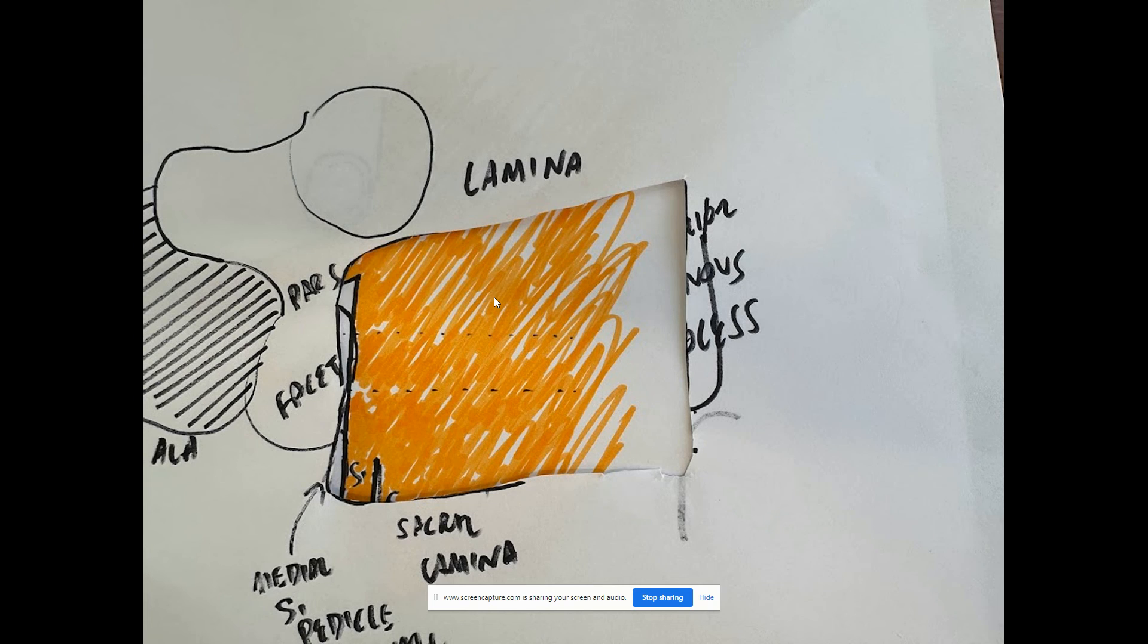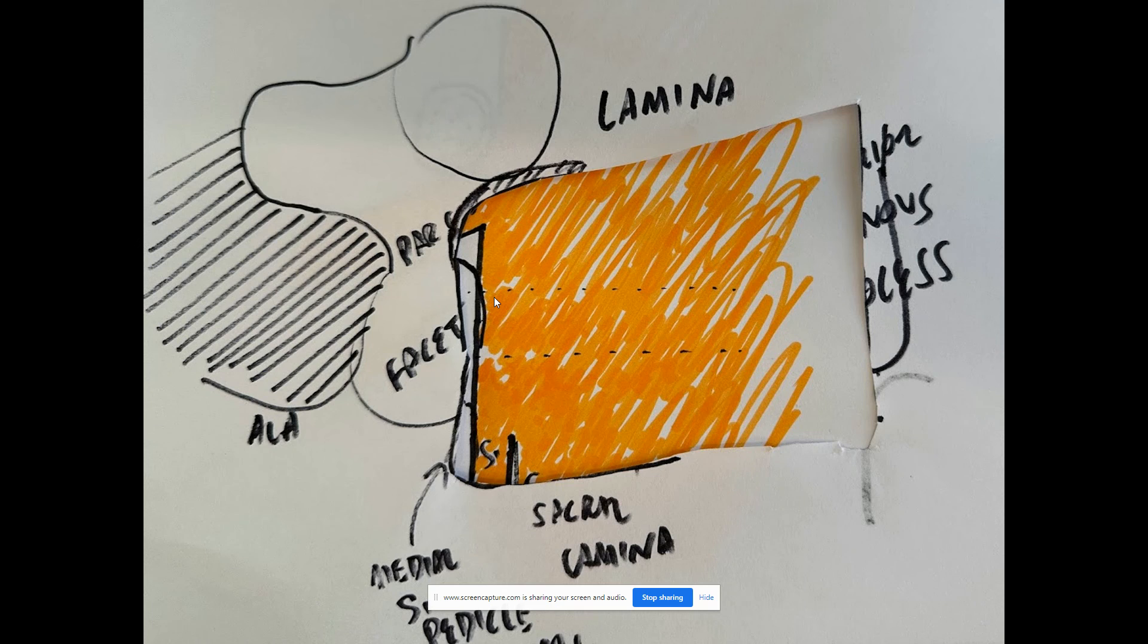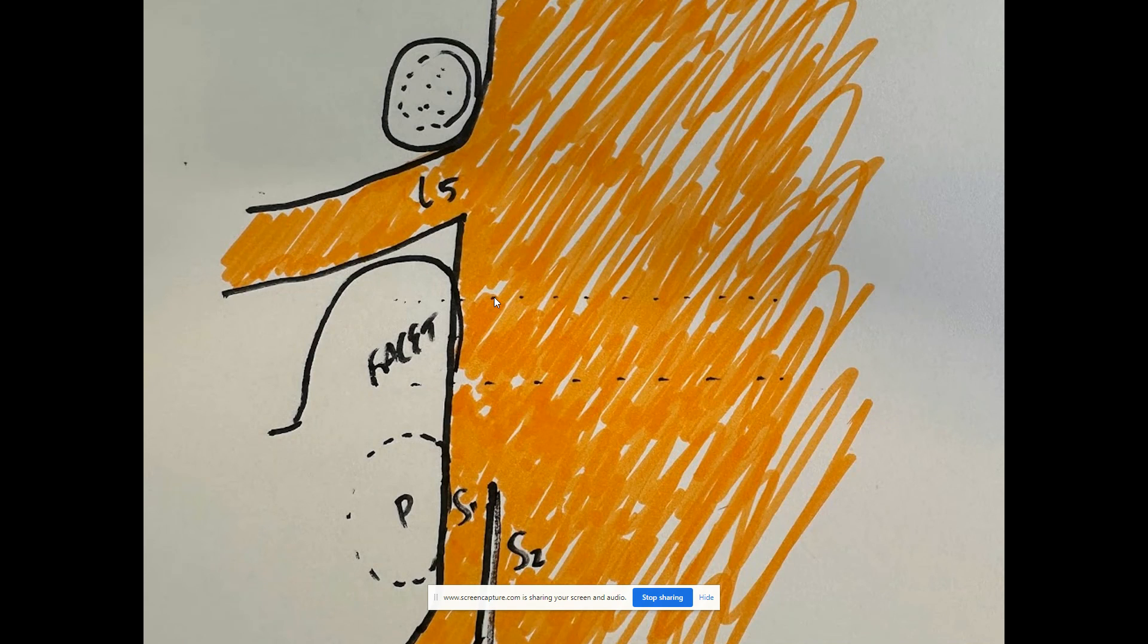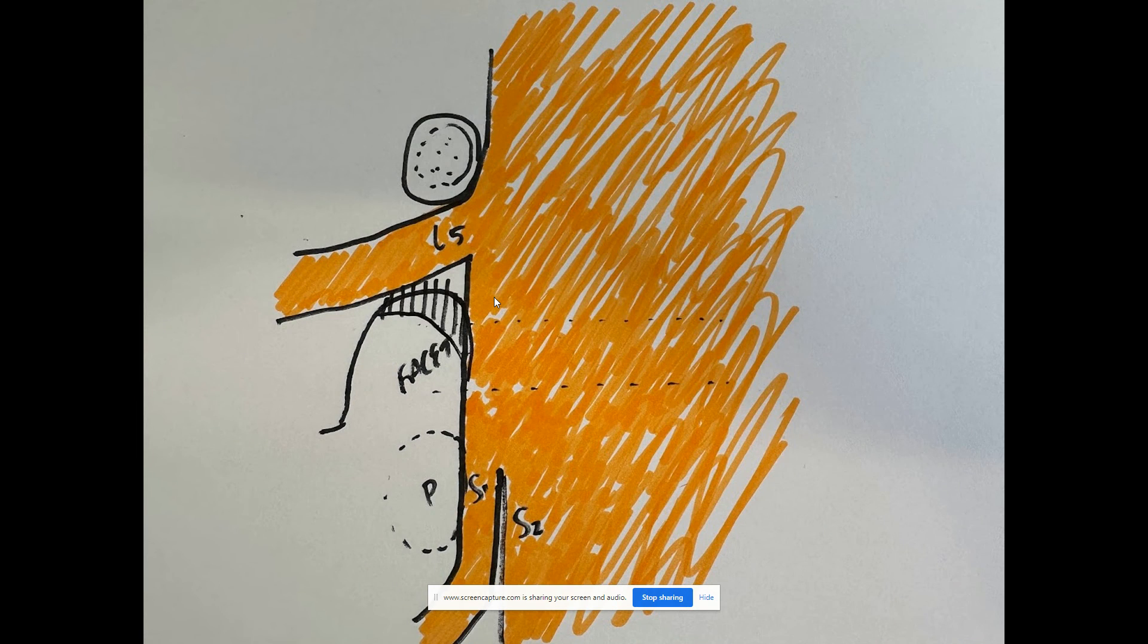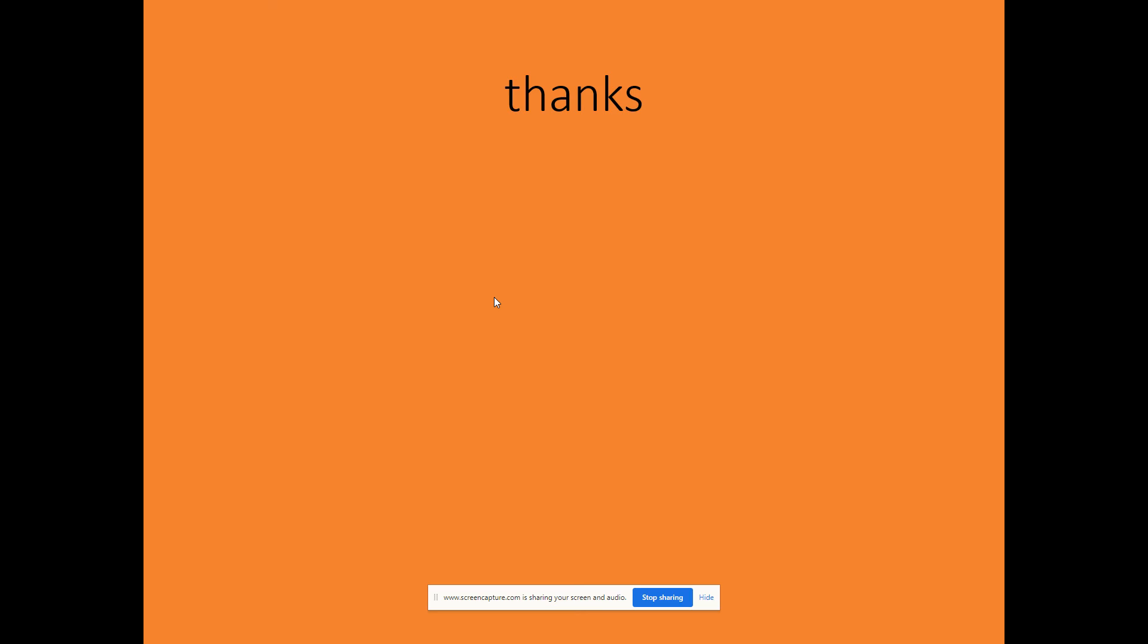You should be able to see the L5 nerve root has the same consistency as the dura. At some point you have to go to the opposite side of the table to remove the superior portion of the sacral facet. You don't want to remove all of it, but enough so that the nerve root has plenty of room.